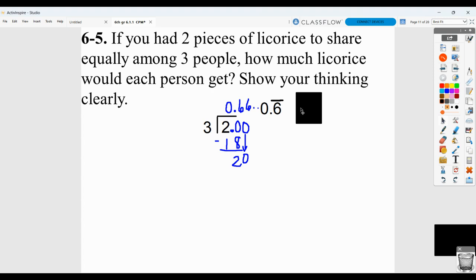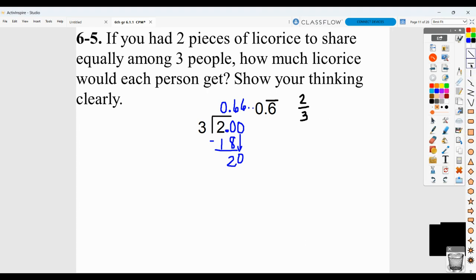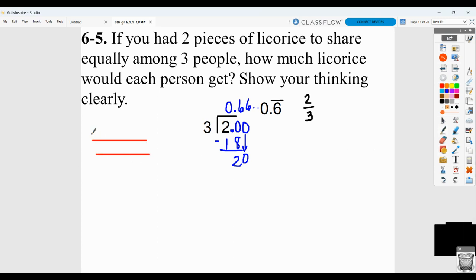We could also think of it as simply two-thirds. Everybody is getting two-thirds of a piece. And one way you could show that is to show if these were your pieces of licorice and you're dividing them by three people. Everybody is getting two-thirds because they're getting a third from this piece and a third from this piece, making two-thirds.